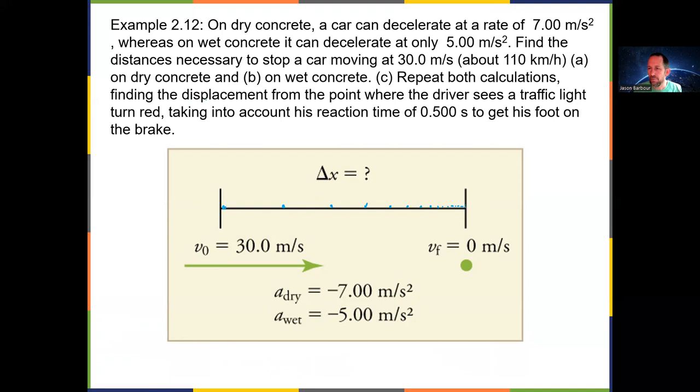But then in part C, it says find the displacement from where the driver first sees the traffic light turn red. But recognizing that it's going to take them some amount of time between when they first see it and when their foot hits the brake and they start to actually slow down. So what's happening during that half a second of reaction time? What's the car doing? Well, it's not slowing down.